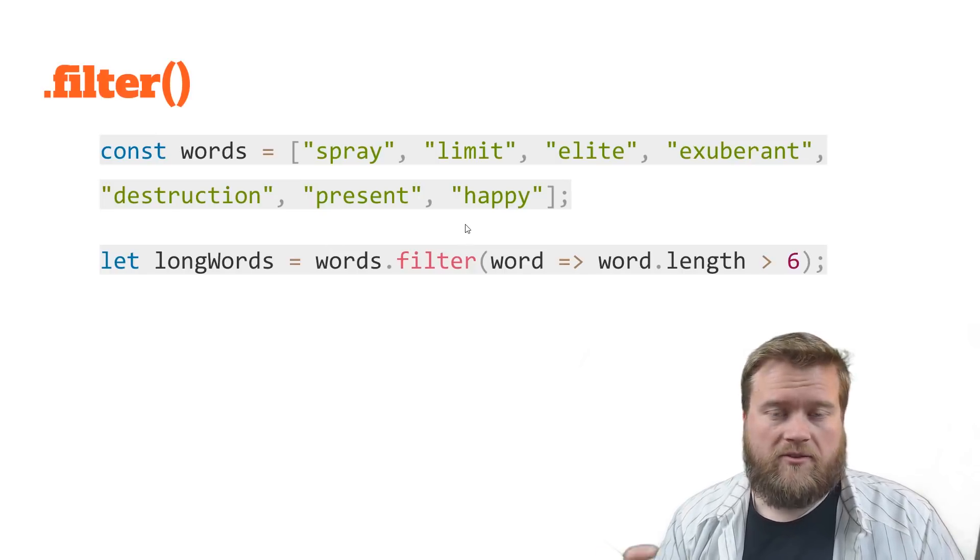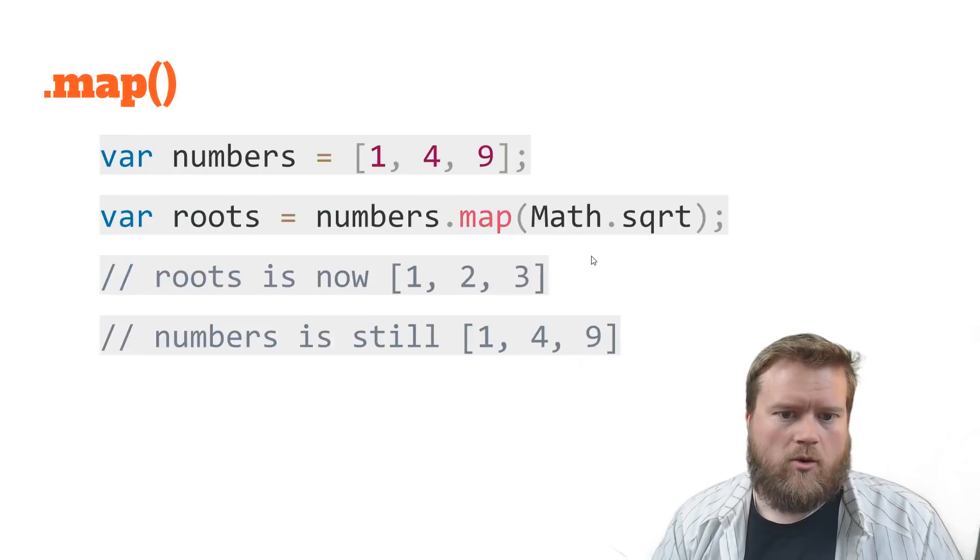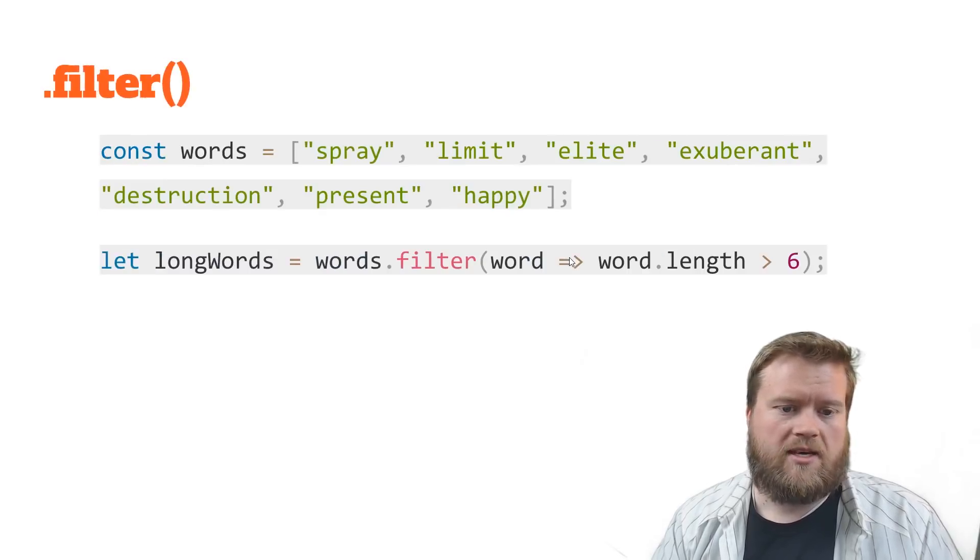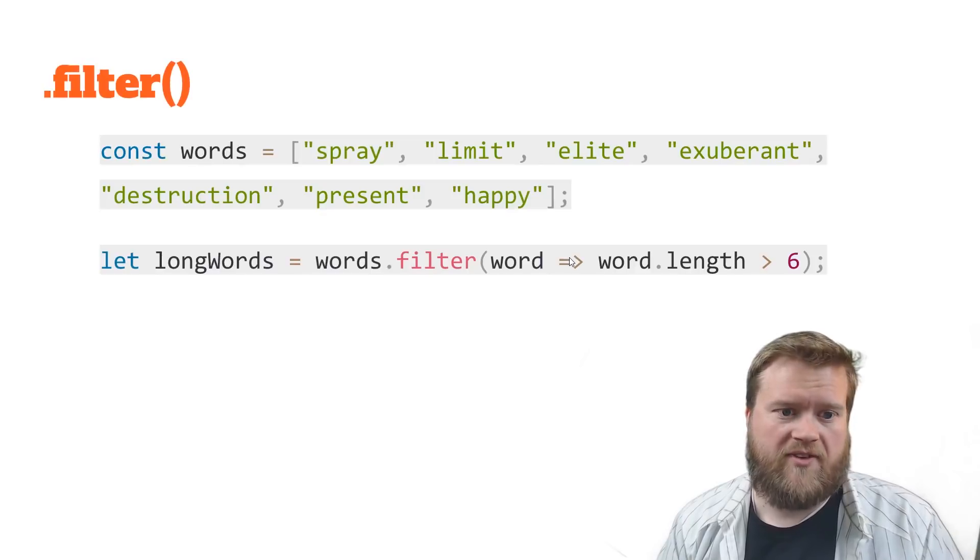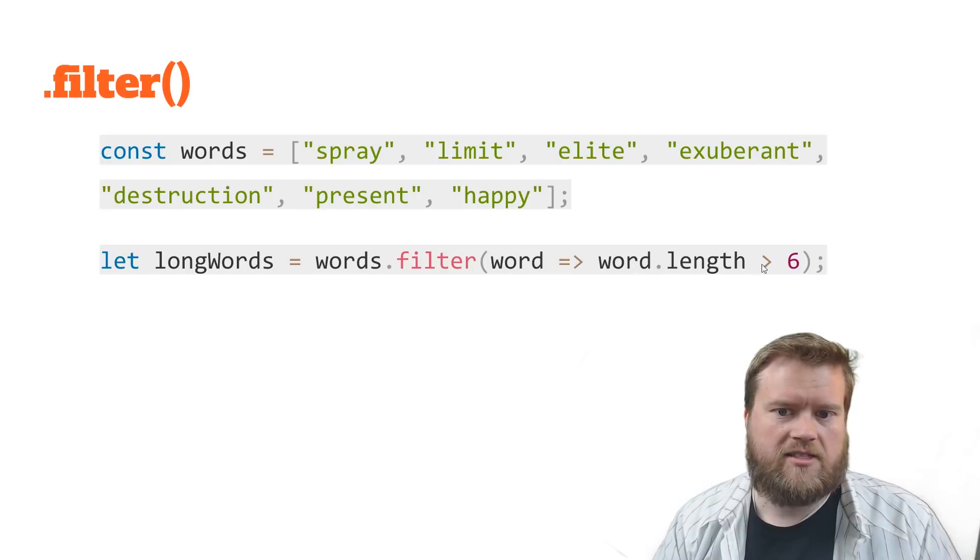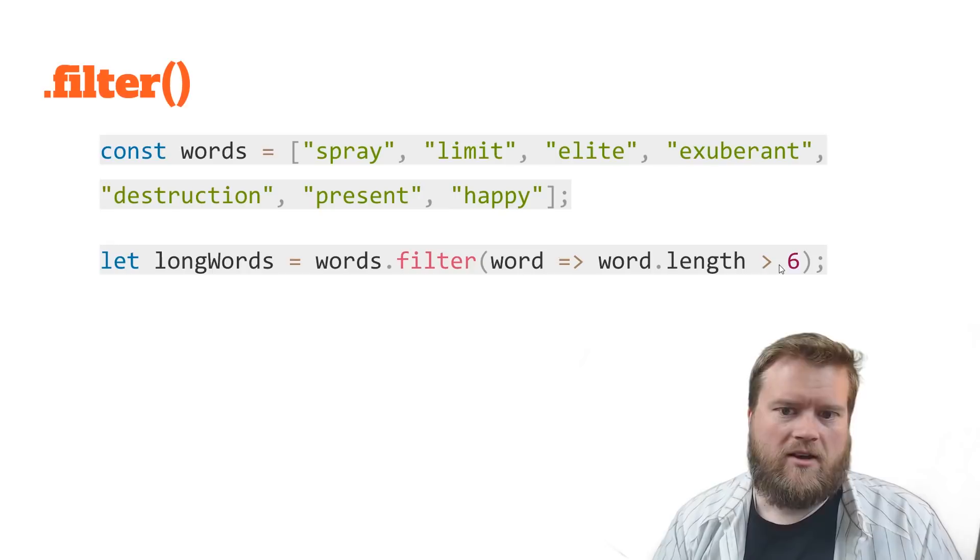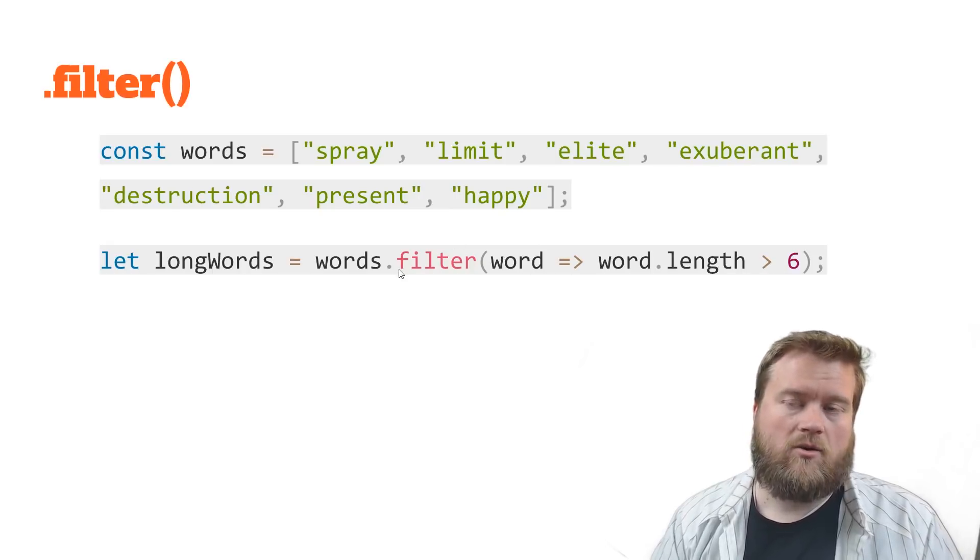What filter does is it looks for a true or false value. So what this is saying is filter, we're using a little ES6 arrow fat arrow function, and it's saying if the word.length is greater than six, so if this is truthy or true, then it'll keep the word.